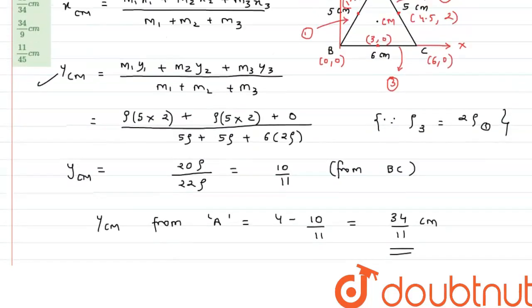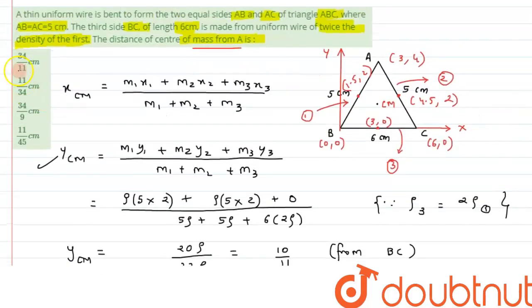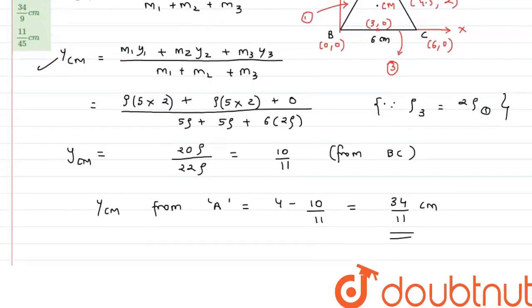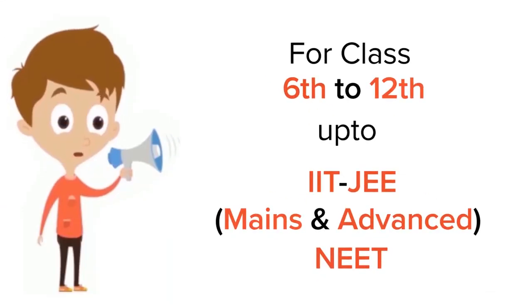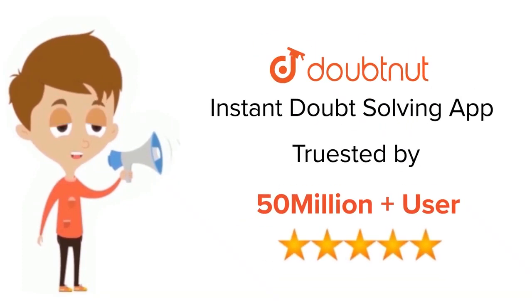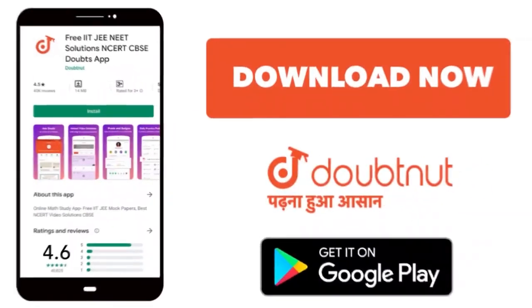That is 34 by 11 centimeter so the option matching is option A so I hope you have understood the concept and thank you for watching for class 6 to 12 IIT JEE and NEET level trusted by more than 5 crore students download Doubtnut app today.